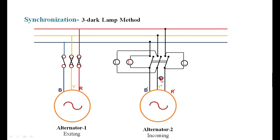To summarize: adjust the field so that the voltage matches the bus bar voltage, then check the phase sequence. The lamps should be going dark and bright simultaneously — if they are blinking at the same time, you can conclude that the phase sequence matches the bus bar phase sequence.